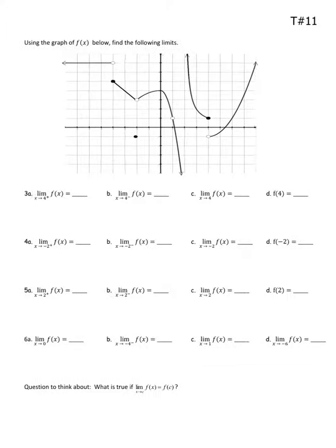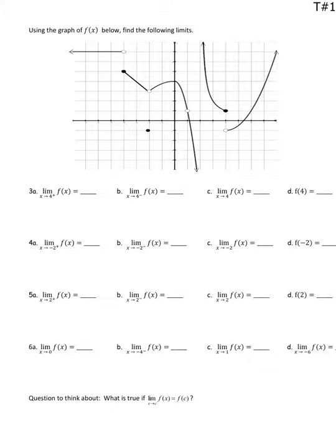I really hate it when people miss these limits graphically because your eyes tell you the answer — they should tell you the answer. All you have to make sure you know is how to look at the right spot. Usually test questions are not going to ask you to do from the right, from the left, and overall separately. But in the notes here we're exploring different things. This first one: you're approaching 4 from the right. An x value of 4 is right here, but remember my pin is always on f(x). Coming in from the right, what y value am I headed to? Negative 1. Does the open circle matter for limits? No.